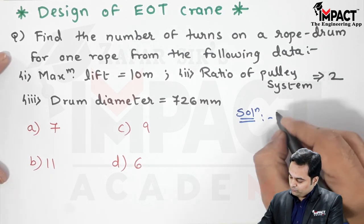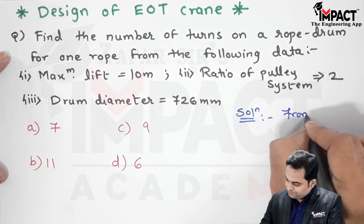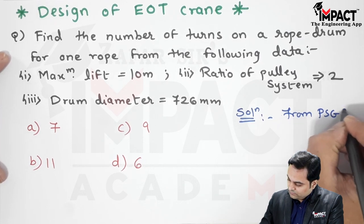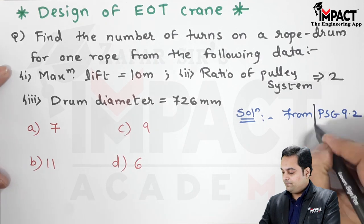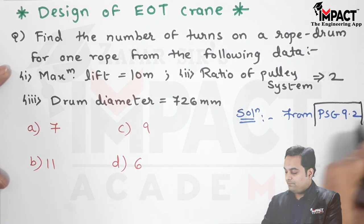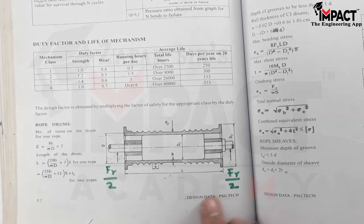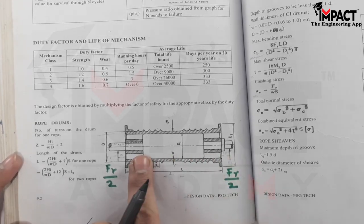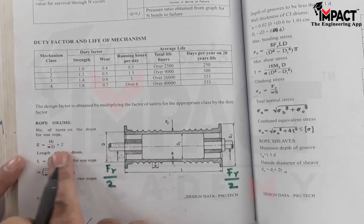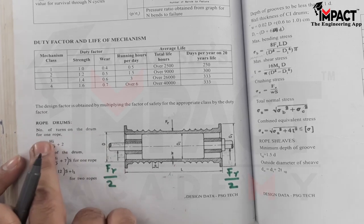From PSG 9.2 for the rope drum, as we see here on page number 9.2, here is the rope drum given and the formula is for the number of turns on the rope drum for one rope system.